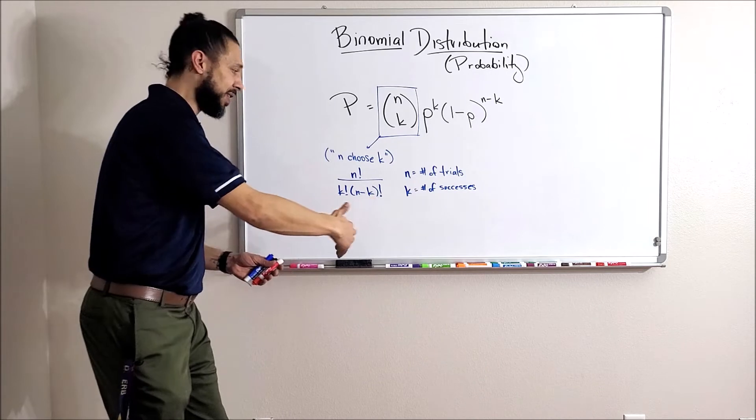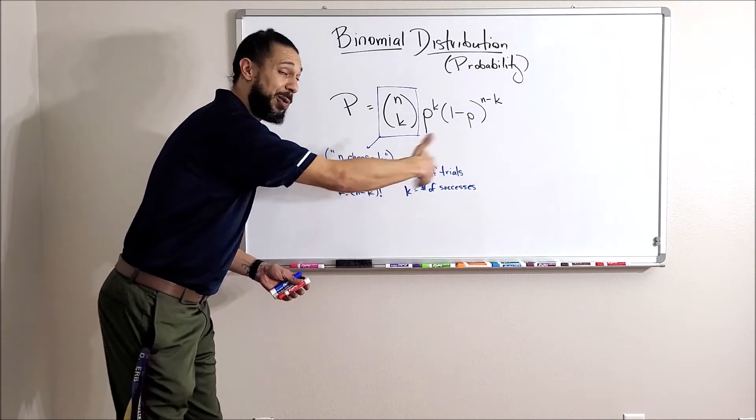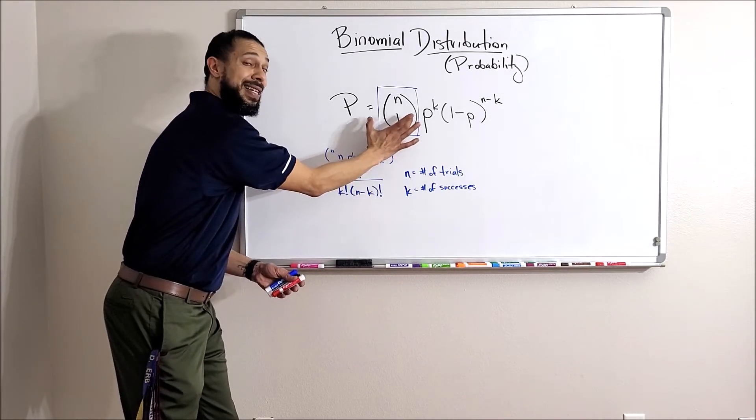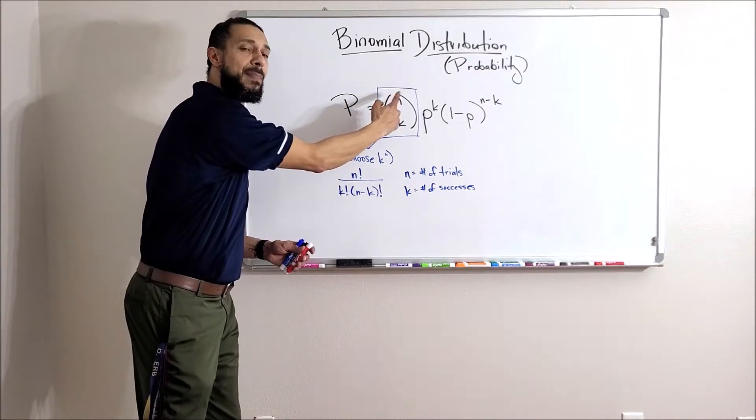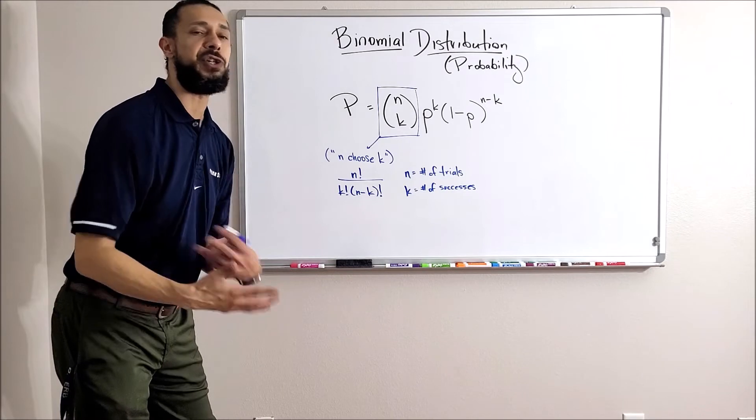So this is the formula. You know what factorial means—10 factorial is 10 times 9 times 8 times 7 times 6, all the way down to 1. This is the formula for that. This has its own formula.